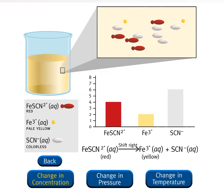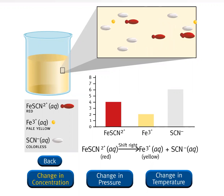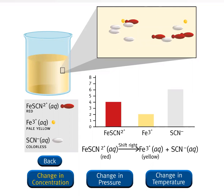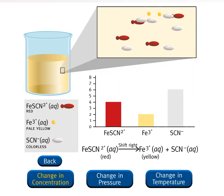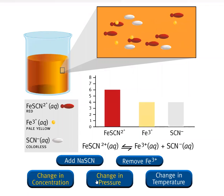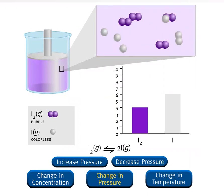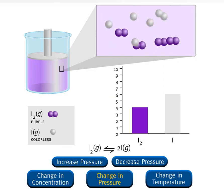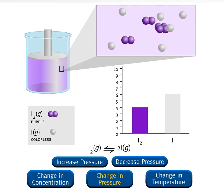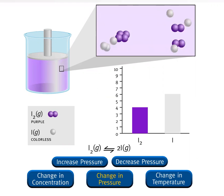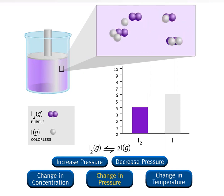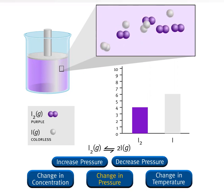Note that the reaction between iron 3-plus ions and oxalate ions is not shown; the shift in the equilibrium position is the focus of the simulation. Consider the equilibrium between iodine gas molecules, I₂, and iodine atoms at high temperature. Iodine molecules in the gas phase are a purple color, and iodine atoms are colorless. Under the given reaction conditions, the ratio of I₂ molecules to iodine atoms is 2 to 3 at equilibrium, as shown in the microscopic view.